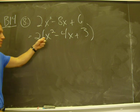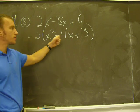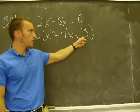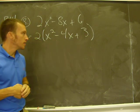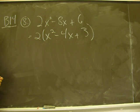2 times x squared gives me 2x squared, 2 times negative 4x gives me negative 8x, and 2 times positive 3 gives me positive 6. Step 1 is done.